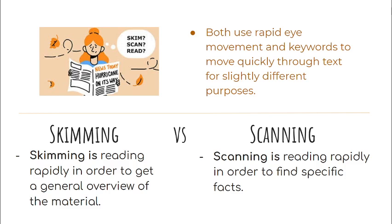Both skimming and scanning use rapid eye movement and keywords through text; however, they have different purposes. Skimming means reading rapidly in order to get a general overview of the material, whereas scanning refers to reading rapidly in order to find specific facts. For example, skimming is what you do when you read the newspaper — you don't read all the articles from page one to the last section; you only pick a particular topic that interests you.